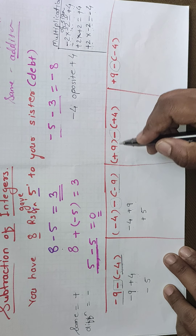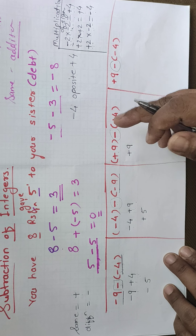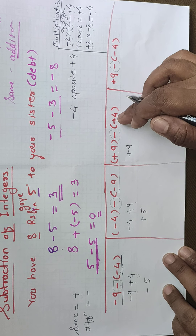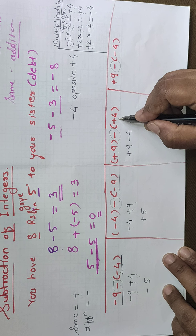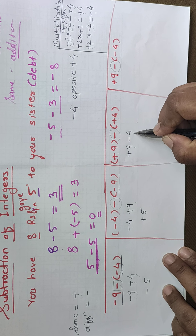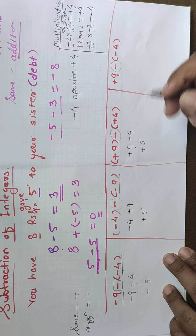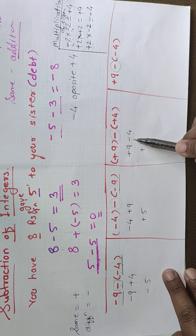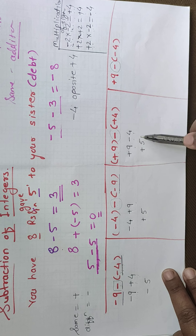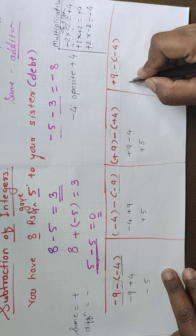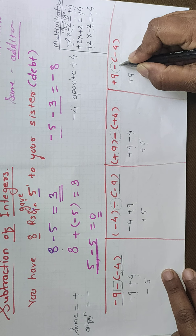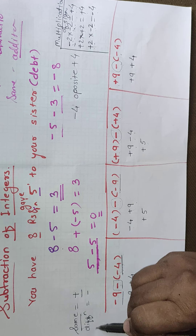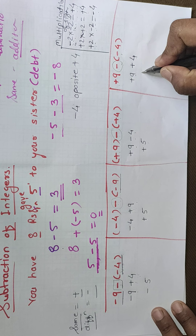Next example: plus 9 minus (plus 4). Write the first number as it is. The opposite number of plus 4 is minus 4. So signs are different — we give negative sign — and 9 minus 4 equals 5, answer is plus 5. Last example: plus 9 minus (minus 4). Signs minus and minus are same, so we give plus sign, and 9 plus 4 equals 13.